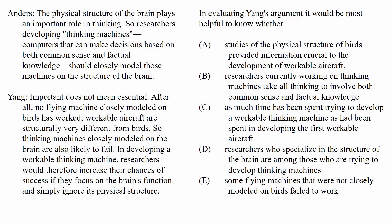To identify the question, let's look at what it asks. In evaluating Yang's argument, it would be most helpful to know whether — this is a 'most helpful' question. It's similar to a strengthen or weaken question because the answer contains information that would make you either more or less inclined to agree with the arguer. The wrong choices are topics that don't affect the argument one way or another, no matter what the answer is.